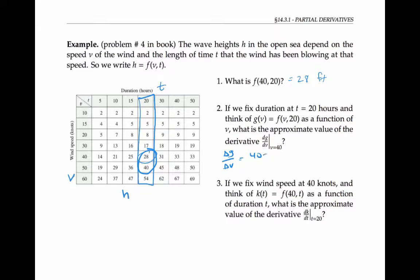Which is 40 minus 28 over 50 minus 40, where the 50 minus 40 comes from the change in v. That amounts to 1.2 feet per knot.